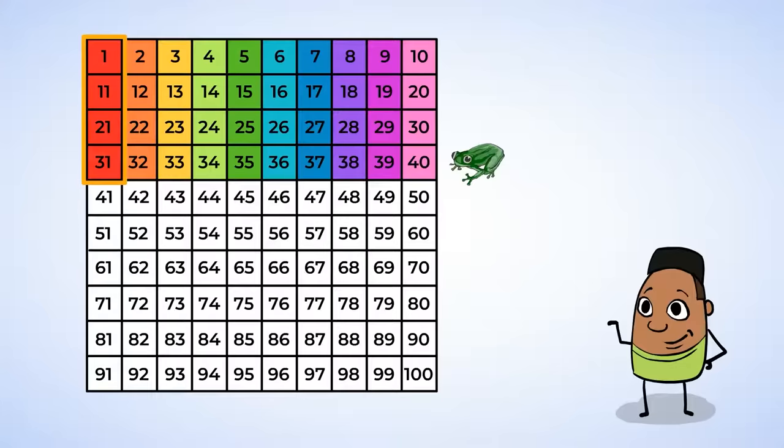Well, look at the red numbers. In this red column, they all have a 1 at the end. 1, 11, 21, 31. So after 40 comes 41. And next, the orange numbers all have a 2 at the end. 2, 12, 22, 32. So after 41 is 42.